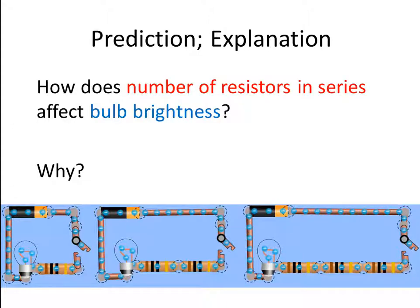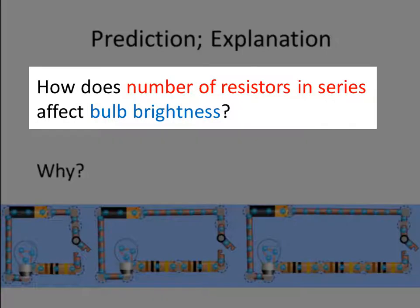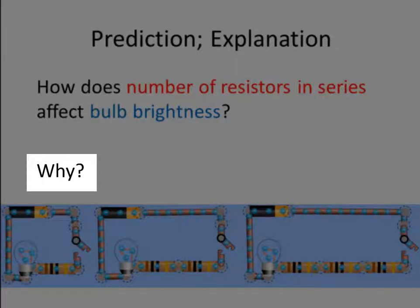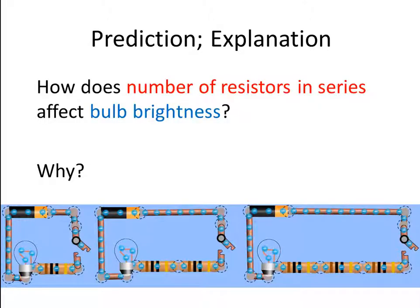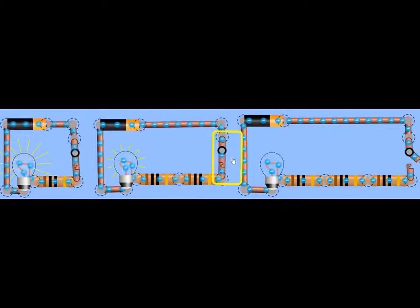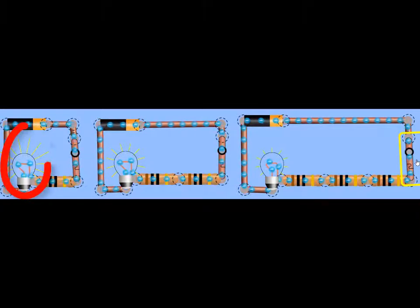Now you need to predict what the answer to this focus question is. How will the number of resistors affect the bulb brightness? Which of these three circuits is going to have the brightest bulb, and why? Pause the movie while you answer those questions. So now I'm going to close the circuits, and as I do so you can see whether your prediction was right. We can see that the first circuit is the brightest.